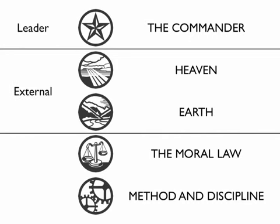First, the commander is you or the leader of your team. Second, heaven and earth make up the external factors — they are equal to both sides of the conflict; each side can plan and accommodate for them, but they cannot be changed. Third, the moral law and method and discipline are the two internal factors. Unlike the external factors, each side can control what they mean and how they will be executed.